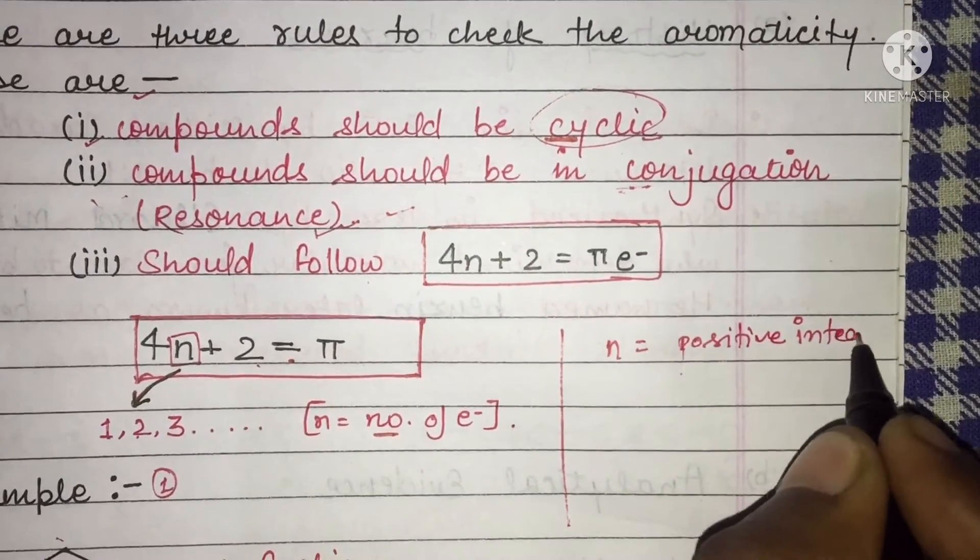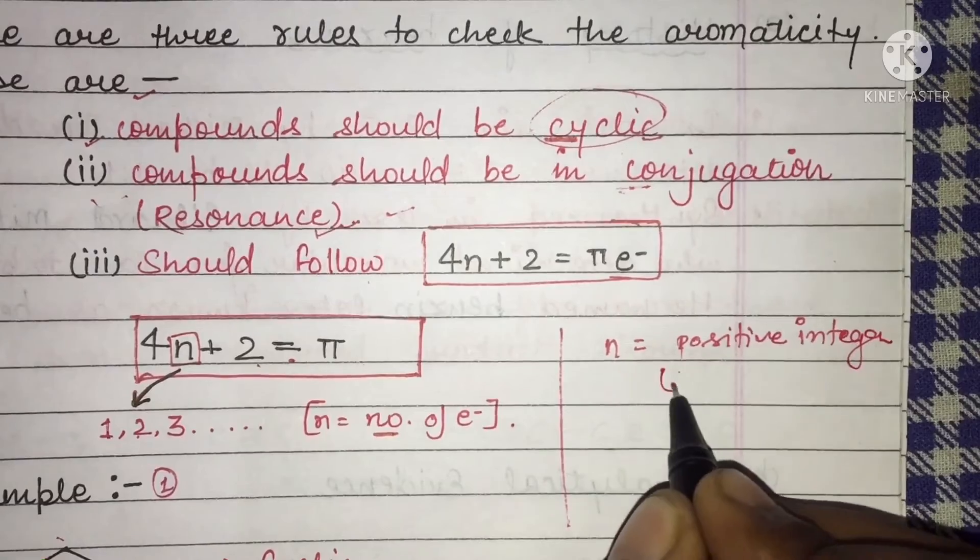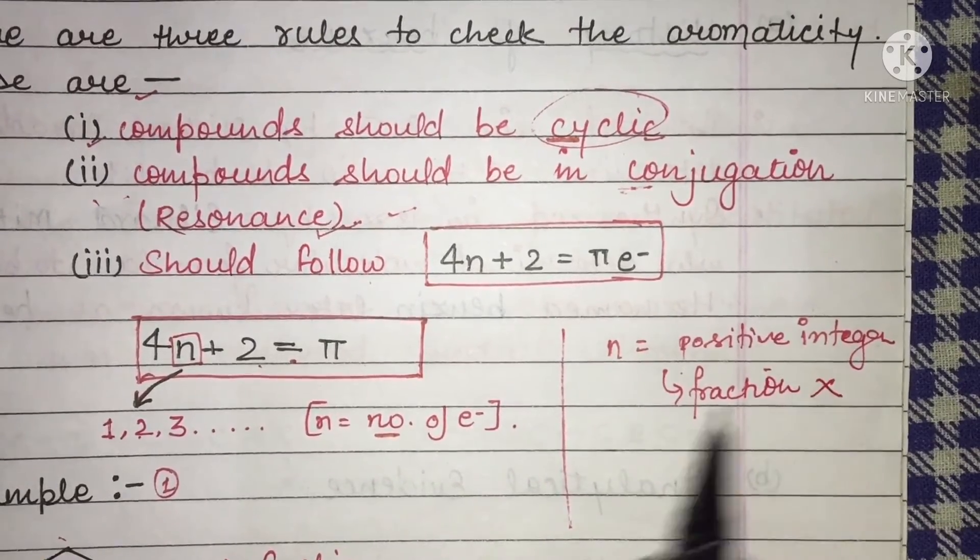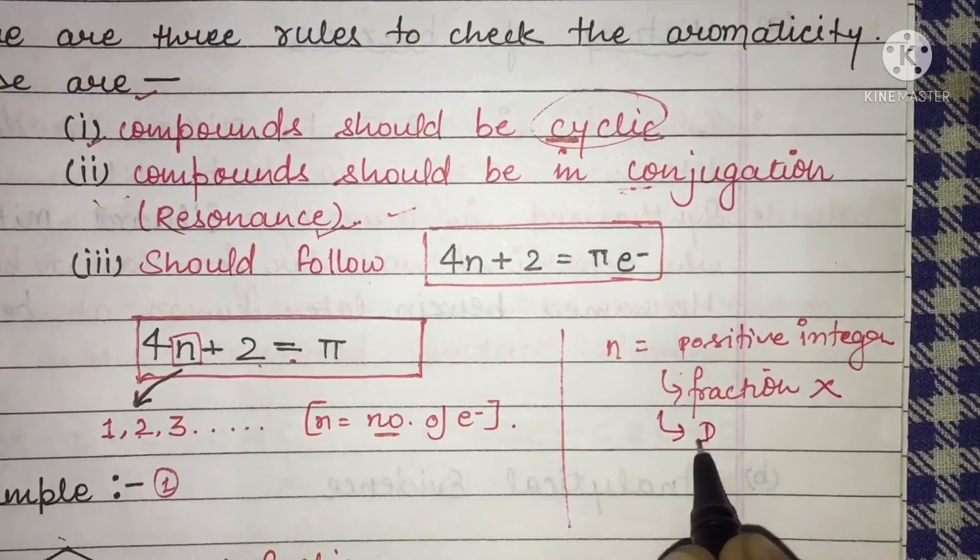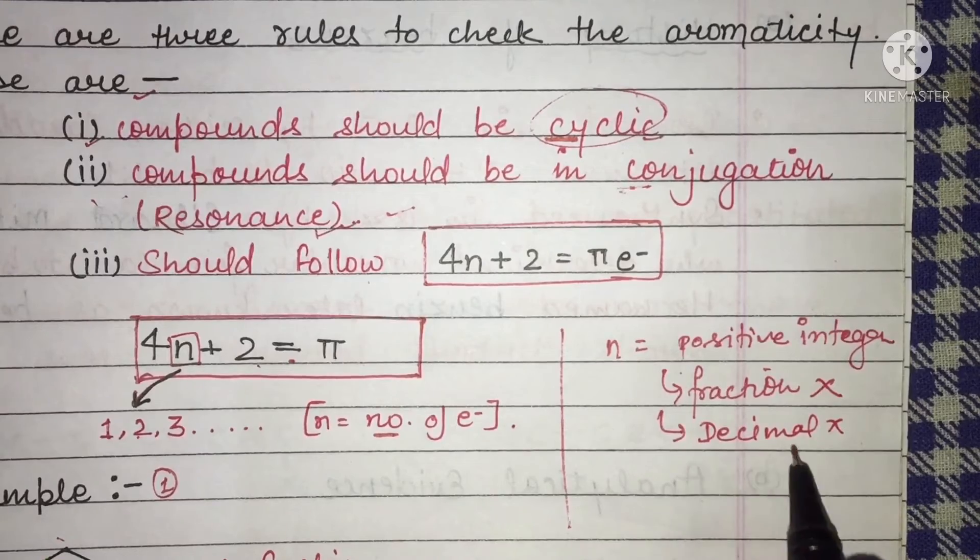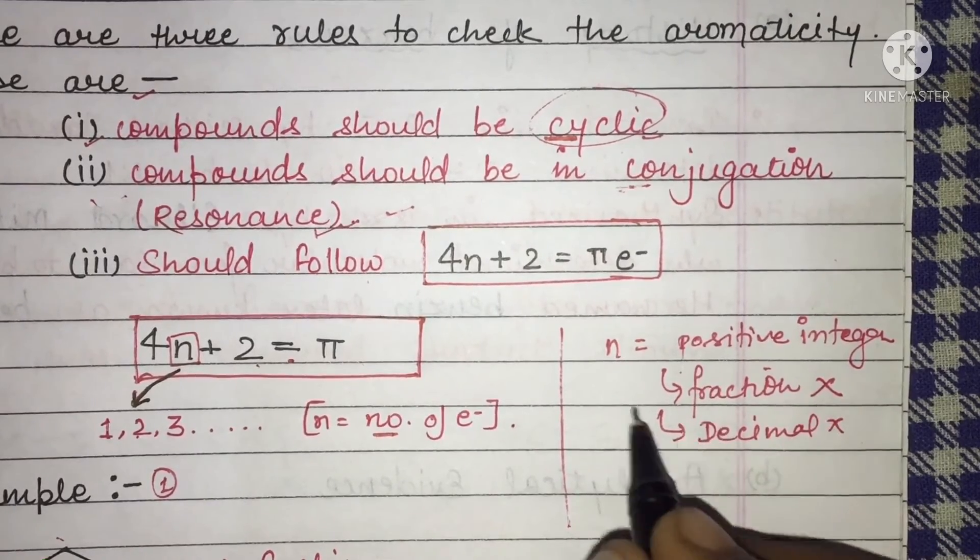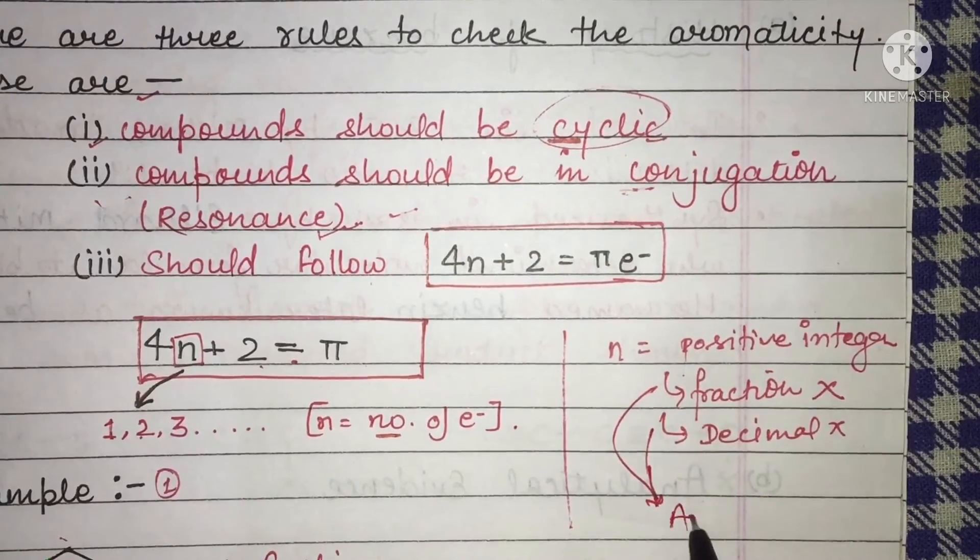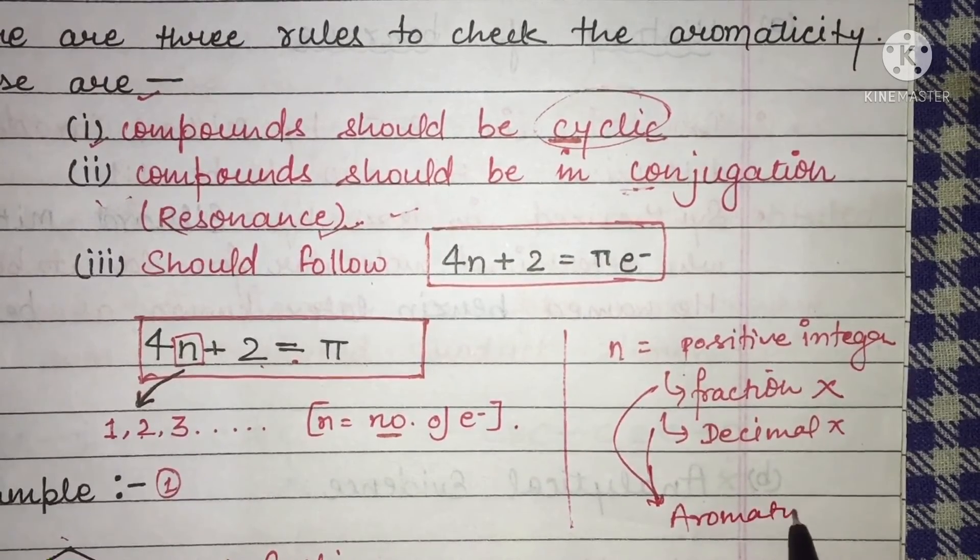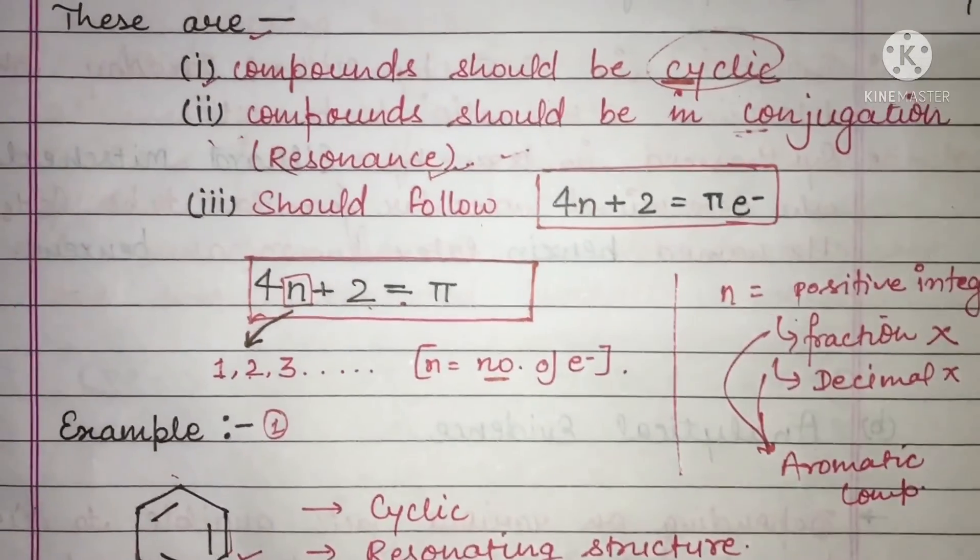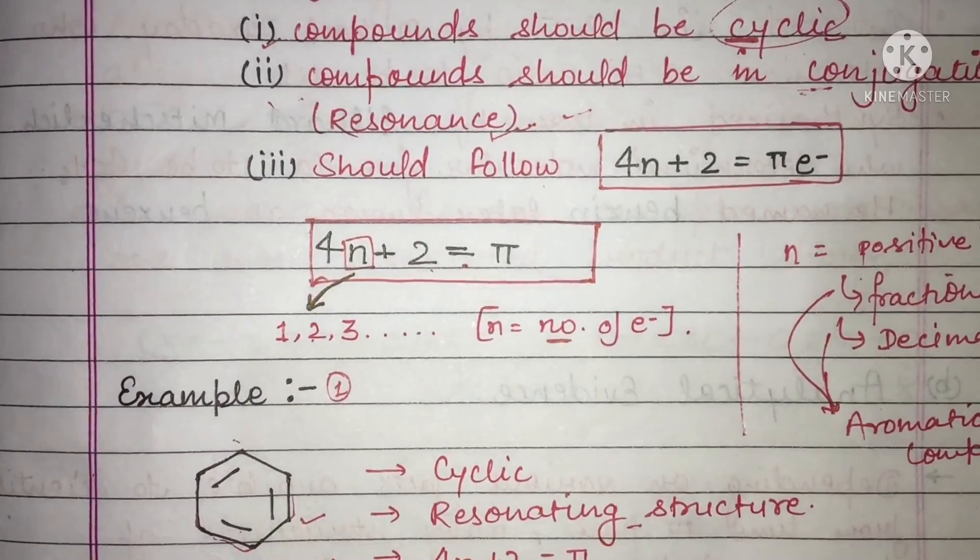N should be a positive integer, not a fraction. If all rules are followed, it's an aromatic compound. If not, it's not an aromatic compound.